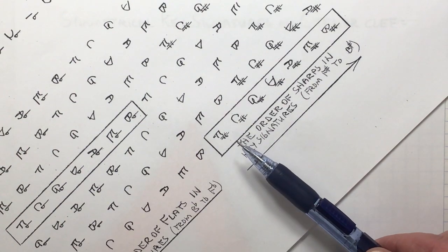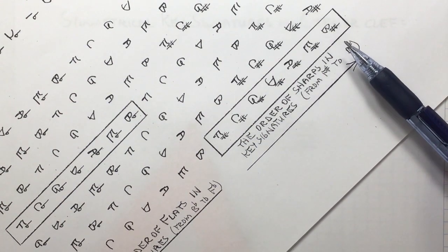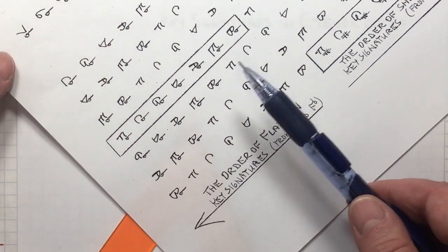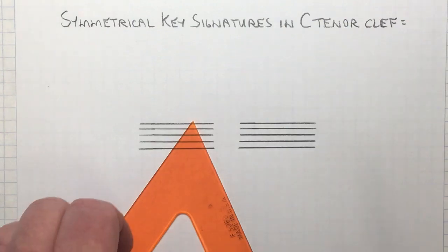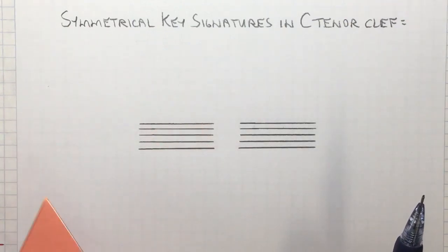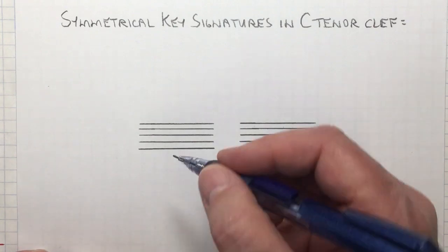F-sharp, B-sharp, B-flat to F-flat. This symmetry is most obvious in key signatures on C-tenor clef.